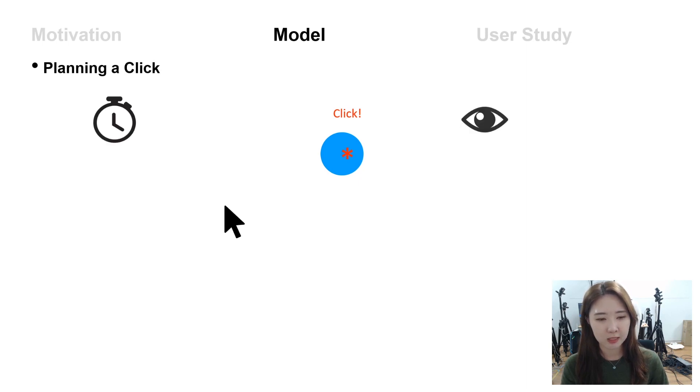In the pointing process, our internal clock processes two types of cues to estimate the time to click. The two types of cues are namely the temporal cue and the visual cue respectively.